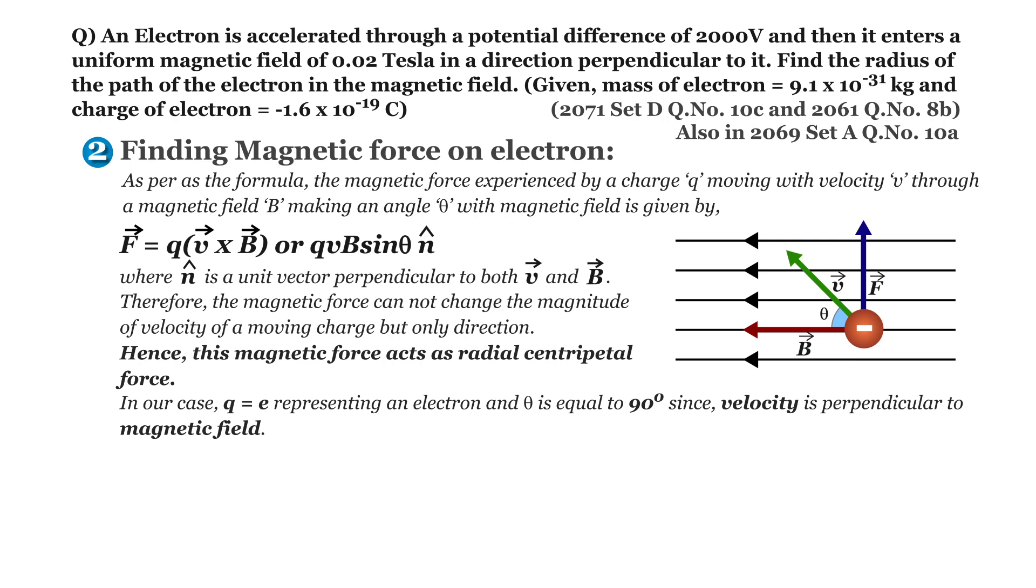In our case, Q equals E representing an electron and theta equals 90 degree since v vector is perpendicular to B vector, that is, velocity is perpendicular to magnetic field. Hence, Fm equals absolute value of minus 1.6 into 10 to the power minus 19 coulomb times 2.65 into 10 to the power 7 meters per second times 0.02 tesla times sin 90 degree. Or, Fm equals 8.48 into 10 to the power minus 14 newton.